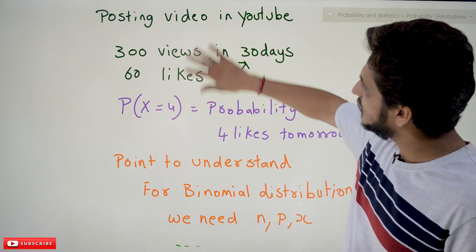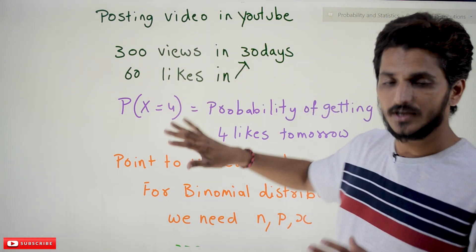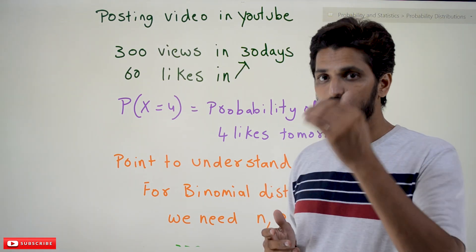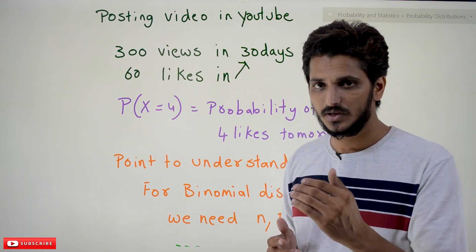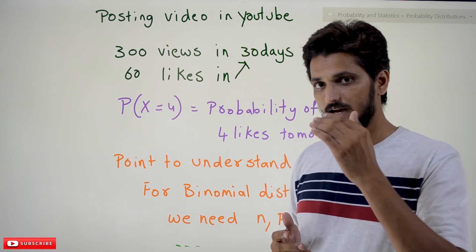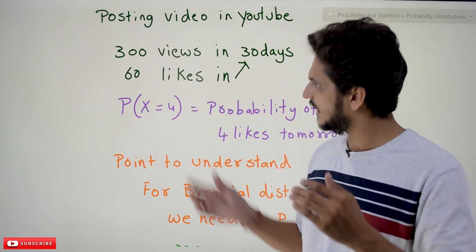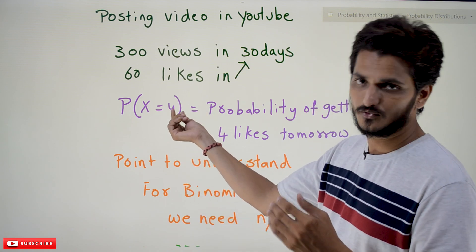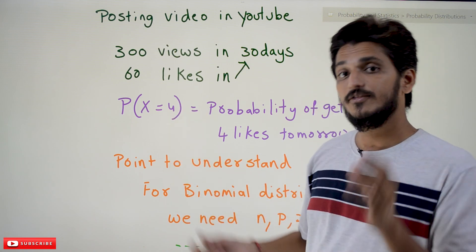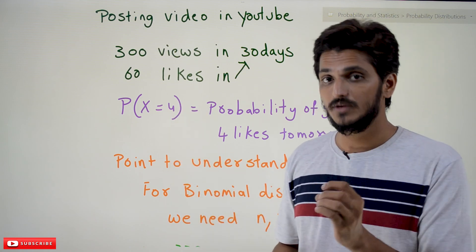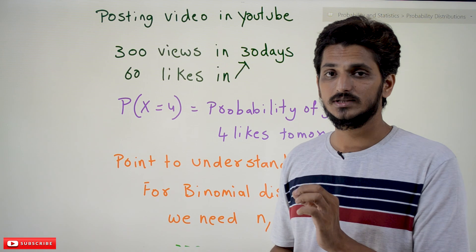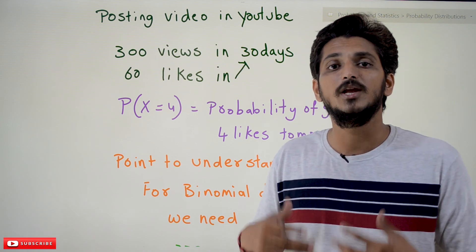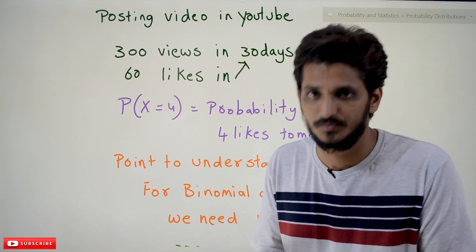In our last class we converted this question into different values. We identified the n value, we identified the p value, and x is already given as 4. If n value, p value, and x value are given, you can apply binomial distribution.